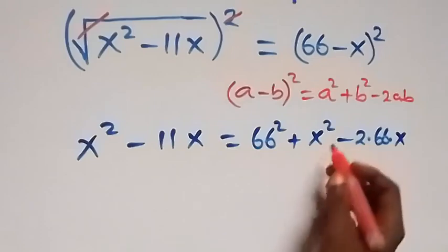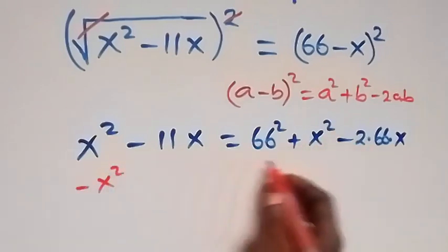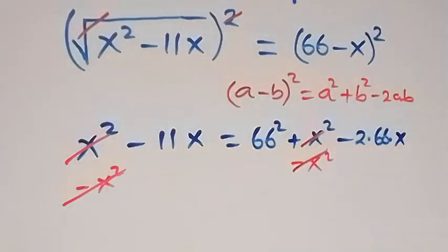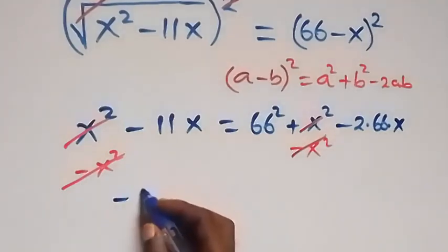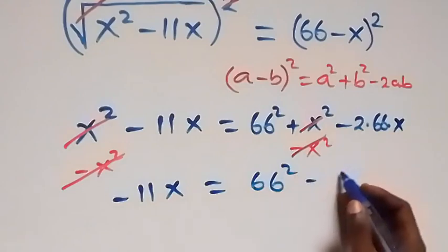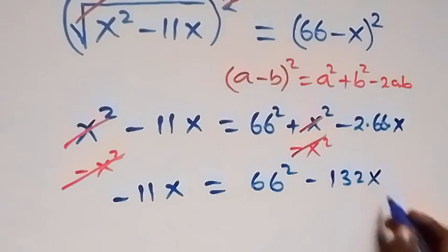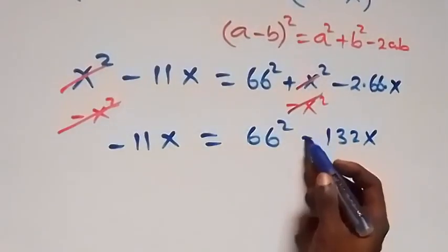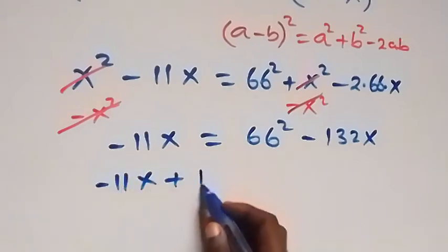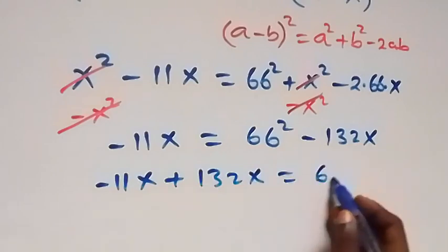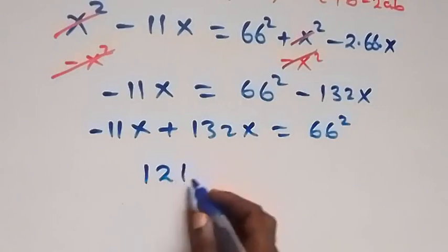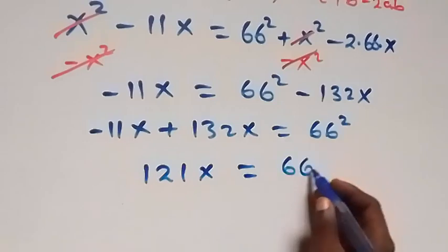Then we subtract x squared from both sides, so minus x squared on both sides. These cancel each other out. From here, what we have left gives us minus 11x equals to 66 squared minus 132x. Bringing minus 132x to the left, it becomes plus, so we have minus 11x plus 132x equals to 66 squared. Then here this becomes 121x equals to 66 squared.